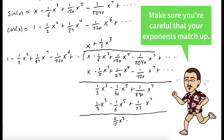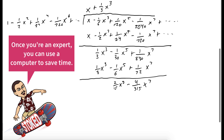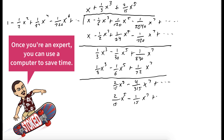When we take the difference, we get two fifteenths x to the fifth minus four three-hundred-fifteenths x to the seventh. How many times does one go into two fifteenths x to the fifth? Two fifteenths x to the fifth many times. Since our leading term of cosine of x is one, we're just reading off those first terms each time. We multiply two fifteenths x to the fifth to each term in our expansion of cosine of x and subtract them off again.